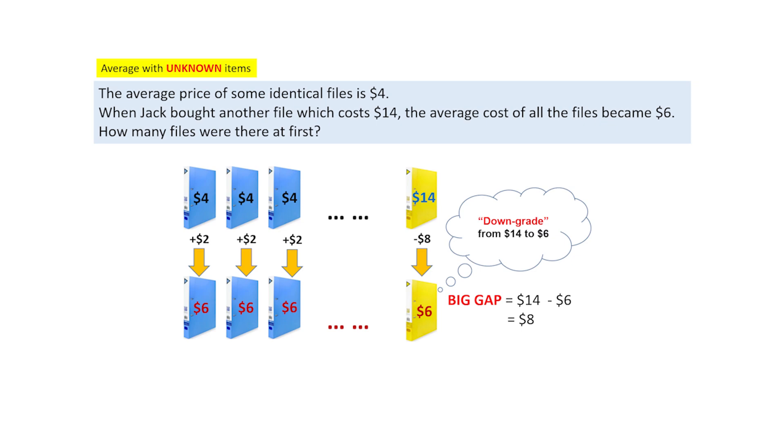With this $8, it is distributed to the other files in the story. And as you can see, from $4, there is an upgrade. It's just another fun term. There's an upgrade of $2 to get a new average of $6. We call this the small gap.